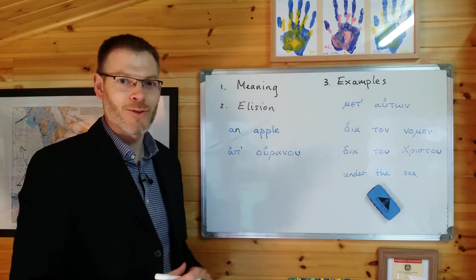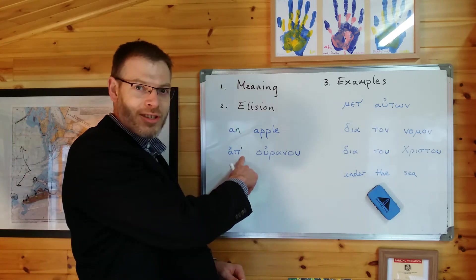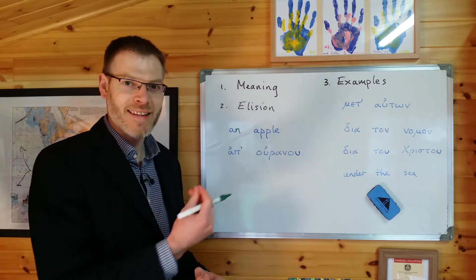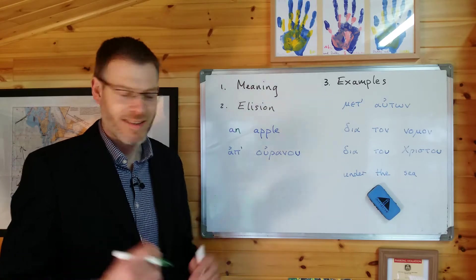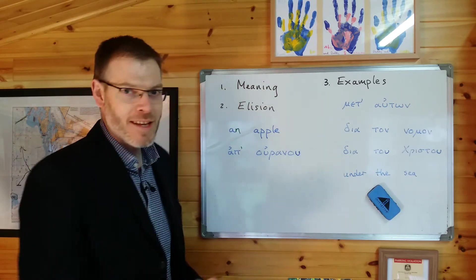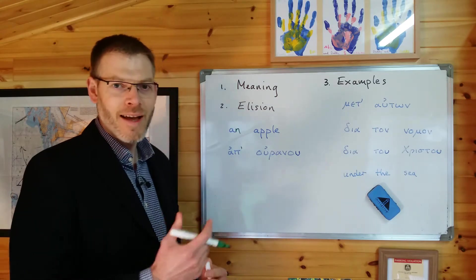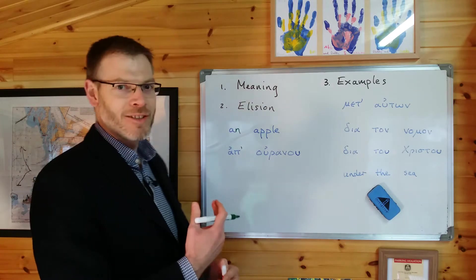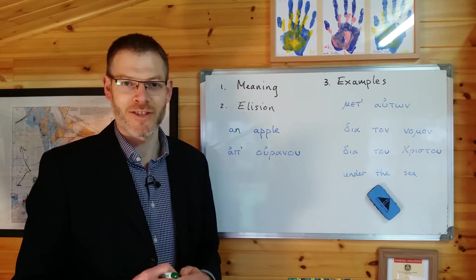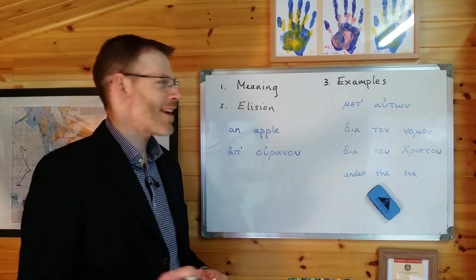Rather than inserting an extra consonant, they simply remove the vowel and add an apostrophe to indicate that something has been removed. So apo-ouranou goes to ap'-ouranou, with the same result that there is now a consonant between the vowel sounds, making it easier to say. This process is called elision, and the vowel that was there is said to have elided. When a letter elides it disappears. Some of the examples we'll look at in just a second, and some of the examples in Duff's book, contain instances where the terminal vowel at the end of a preposition has elided — you can see which ones there are right there on page 48.